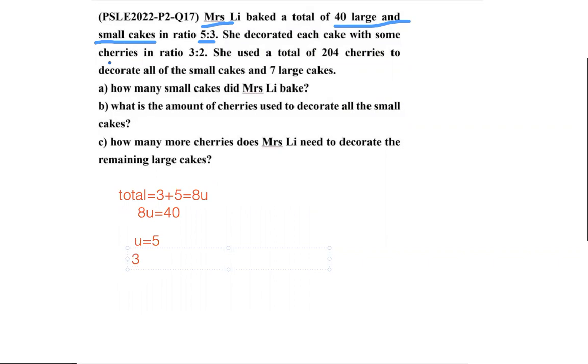They're asking for the number of small cakes, so that will be 3 units = 3×5 = 15. Or you can alternatively use 40÷(3/8), which is also 15. Now we know the answer for part A is 15.